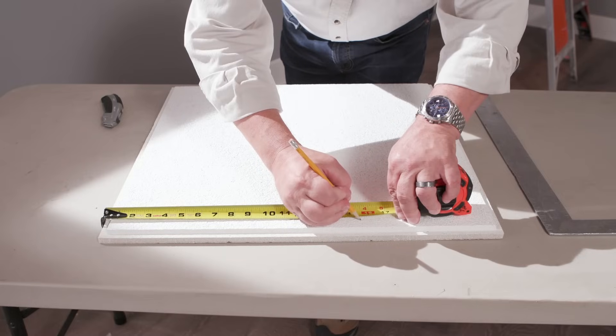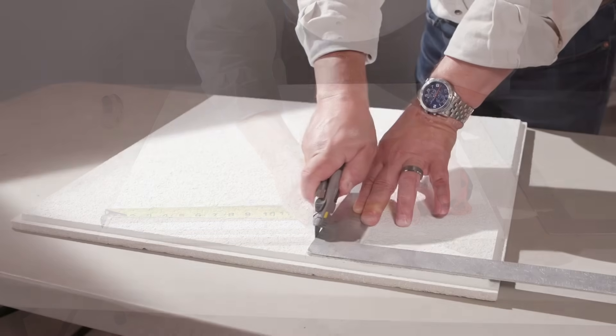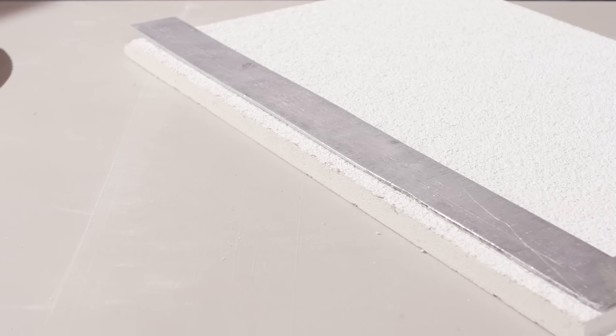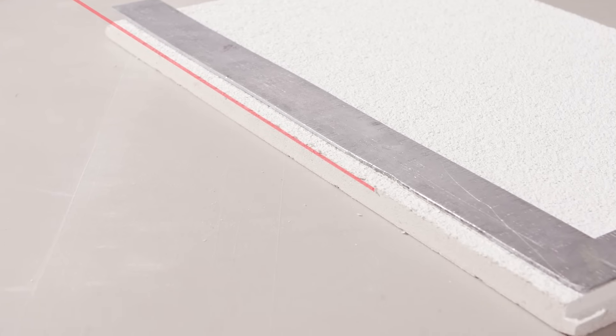Cutting border tiles: Border tiles will likely need to be trimmed. Use a straight edge and cut the panels face up. For tegular edge tiles, you will need to cut the edge that's resting on the wall molding to allow it to lay flat.